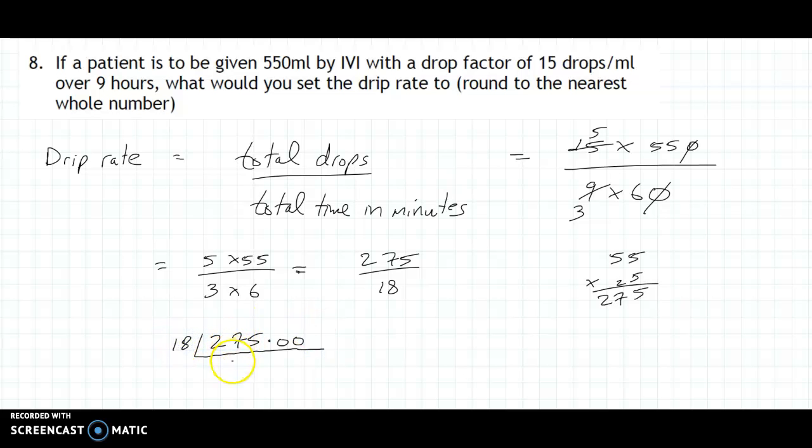18 into 27 goes once, and what's left over? You'd have 9 left over. 27 take away 18 would be 9.